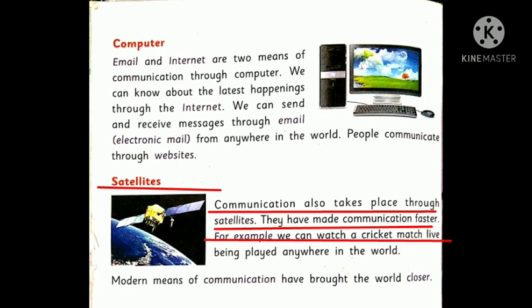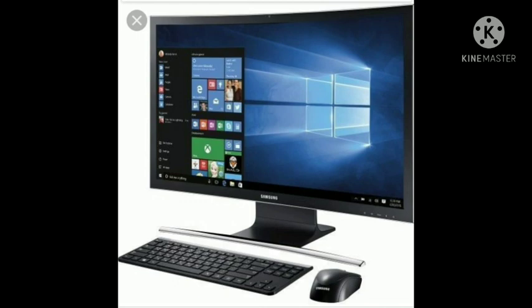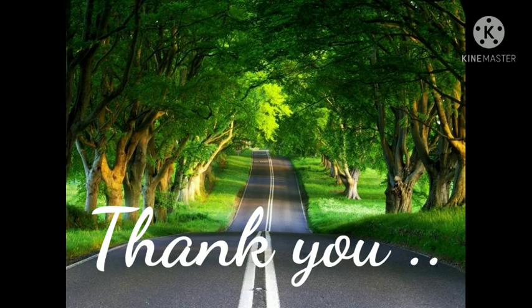These modern means of communication have brought the world closer. These are the various means of communication which we use in our daily life — letters, telephone, radio, television, mobiles, newspapers, etc. Through the internet and satellites we get all the information about the world within no time. They have made the communication system faster. With this we have finished this chapter. Thank you.